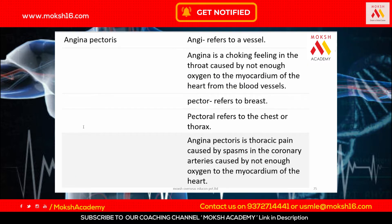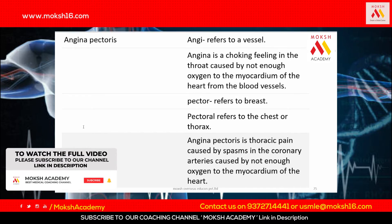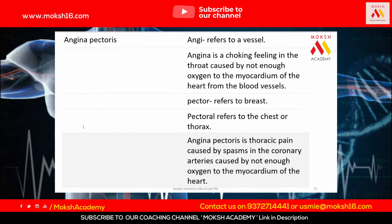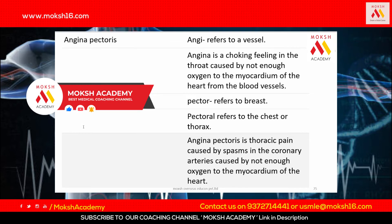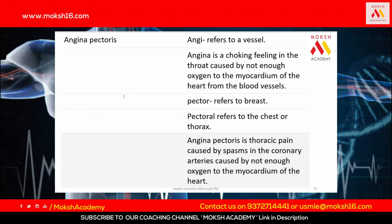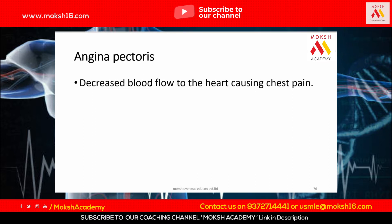Angina pectoris is a very important condition. Angina refers to a choking feeling caused by not enough oxygen in the myocardium. Pector refers to the chest or thorax, so angina pectoris is a thoracic chest pain caused by spasms of the coronary vessels due to insufficient oxygen to the myocardium. This can be detected on stress tests.